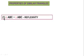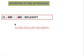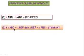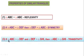Properties of similar triangles. First: triangle ABC is similar to triangle ABC — this property is called Reflexivity. Second: if triangle ABC is similar to triangle DEF, then triangle DEF is similar to triangle ABC — this is Symmetry. Third: if triangle ABC is similar to triangle DEF, and triangle DEF is similar to triangle GHI, then triangle ABC is similar to triangle GHI — this is Transitivity.